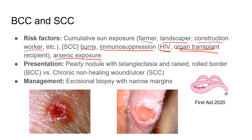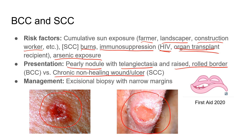BCC classically presents as a pearly nodule with telangiectasias and a raised rolled border — we can see a great example with perfect rolled borders in the image. SCC, in contrast, often presents as a chronic non-healing wound or ulcer — a patient having this ulcer for months or years that never quite healed should tip you off. Management for both is similar to melanoma: excisional biopsy with narrow margins, especially on the NBME exam.